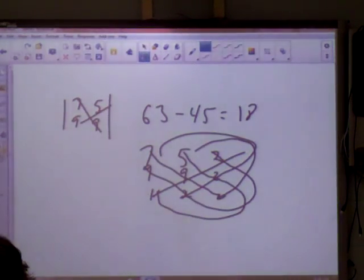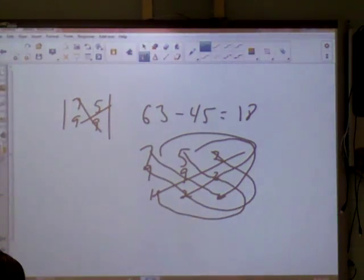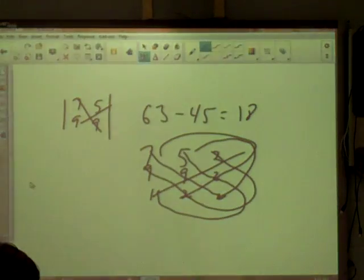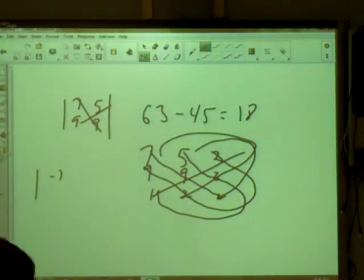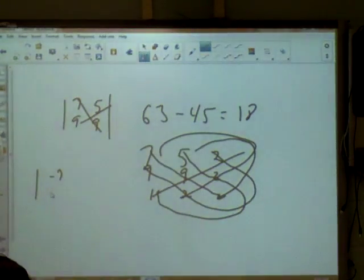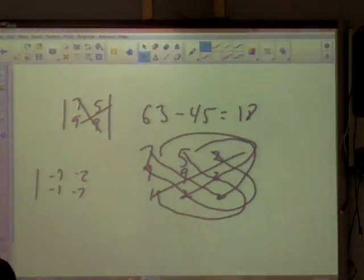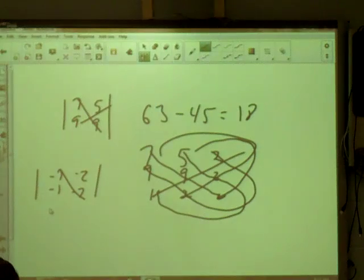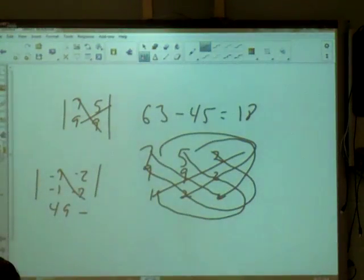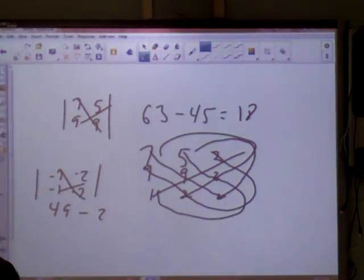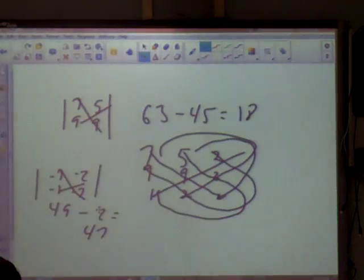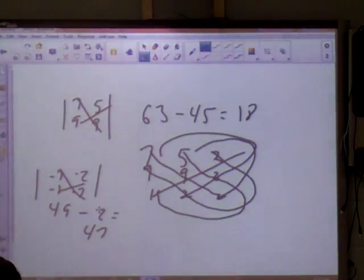Alright, last page. Oh, got another determinant on 20. Determinant again. Do that 2x2 real quick. Negative 7. Negative 1. Negative 2. Negative 7. So, that's 49 minus 2. So, that will be 47. For number 20.